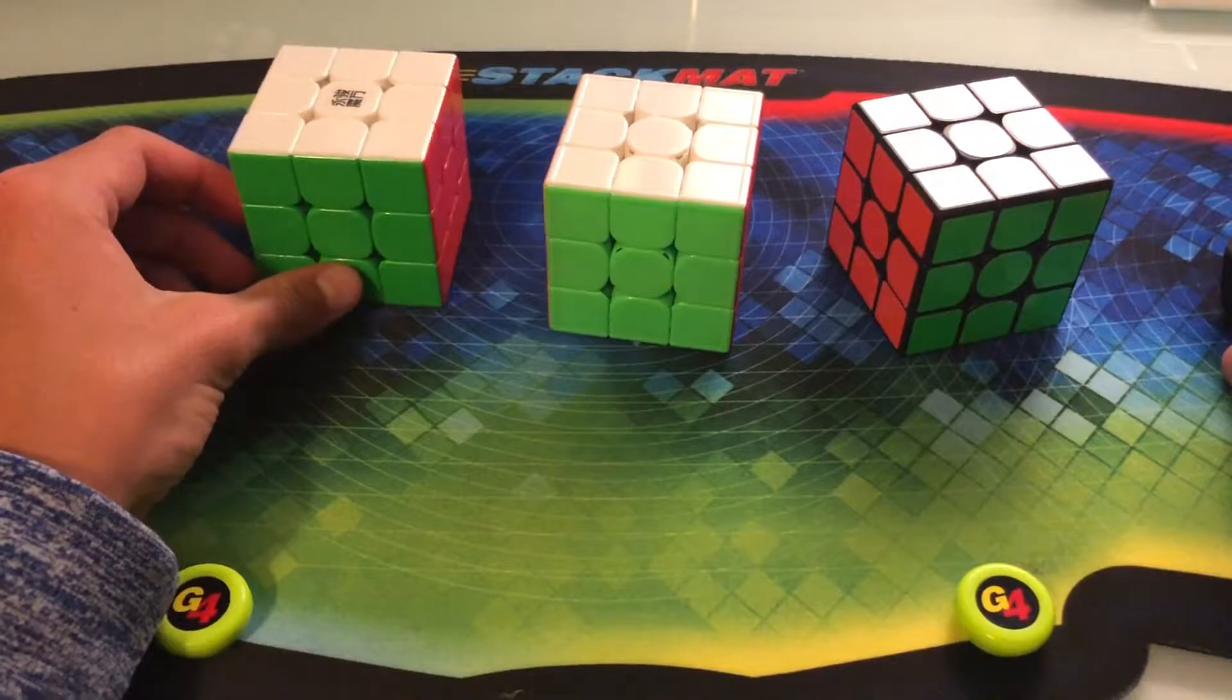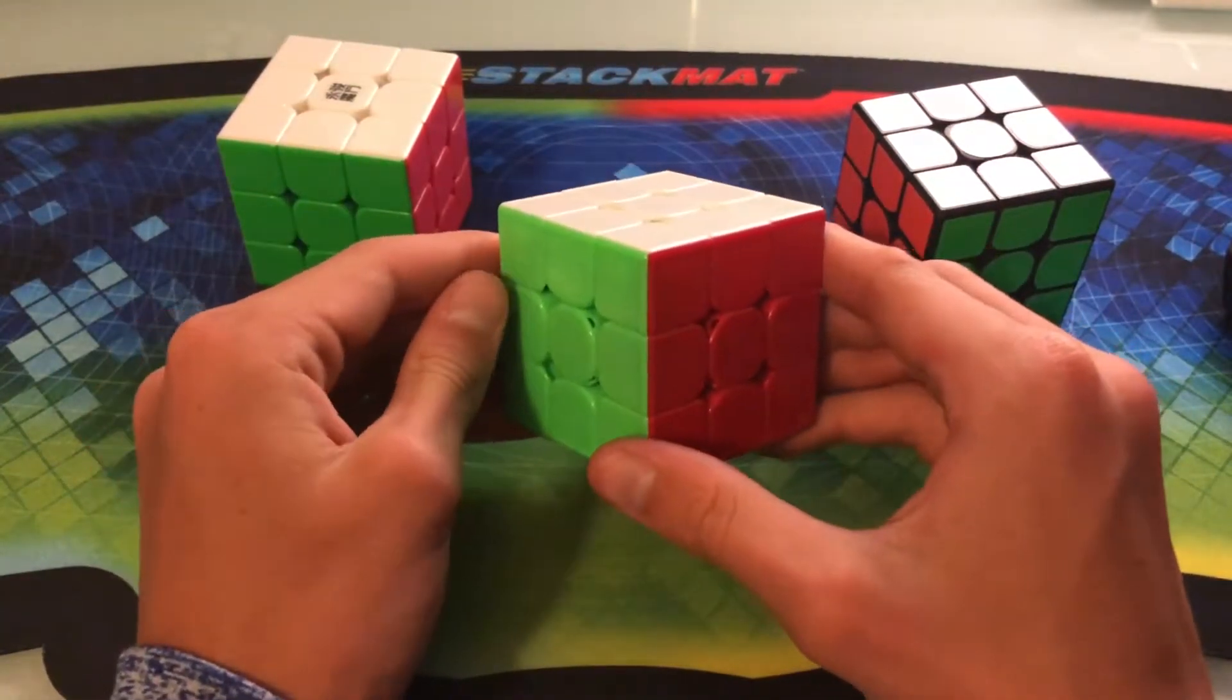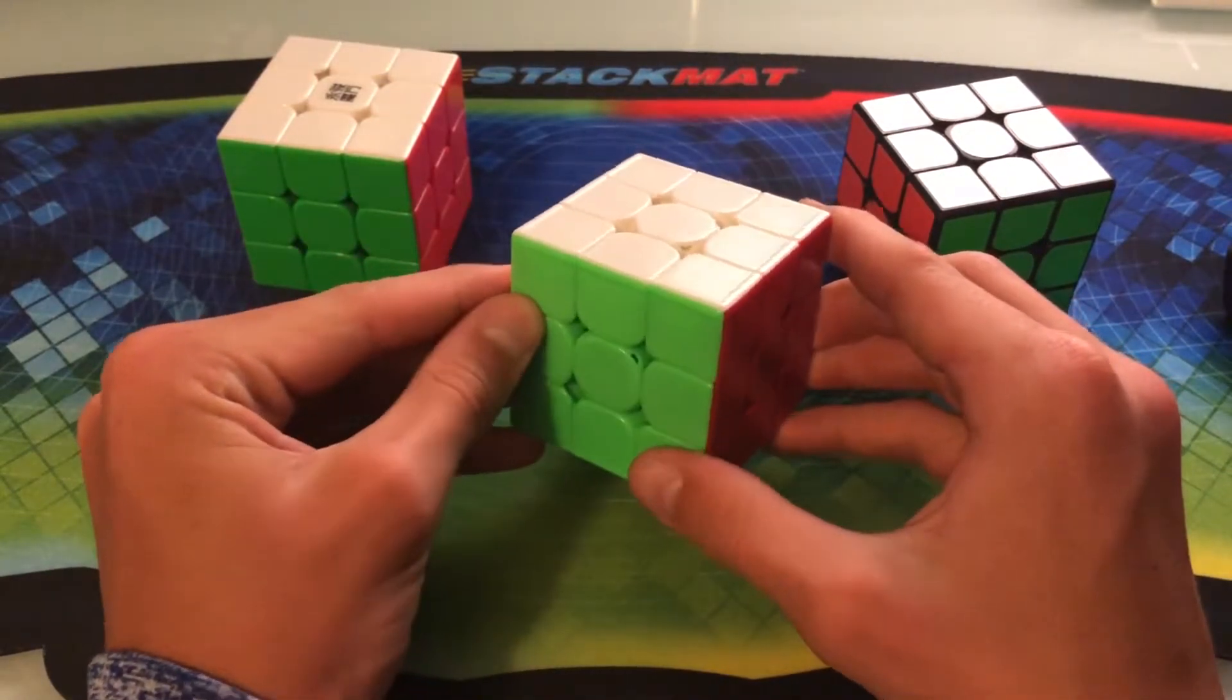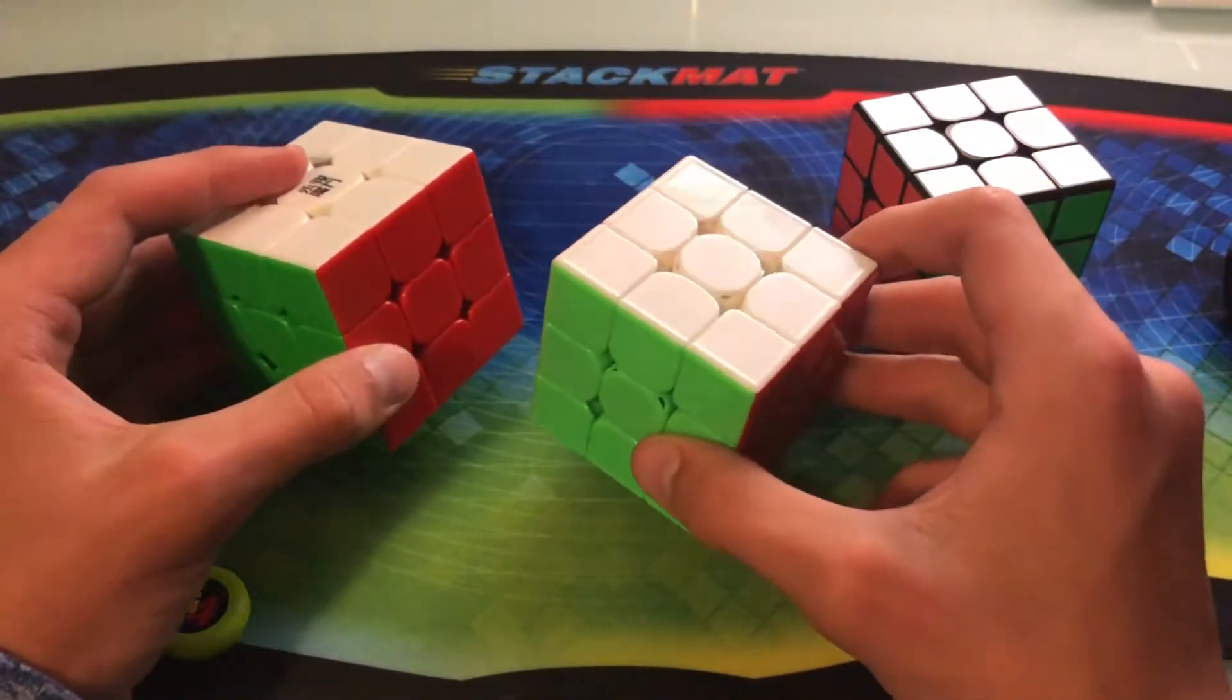And in second place, we have the Weilong GTS-3M at an average of 5 of 19.01 seconds, which is our $40 speed cube, which is kind of interesting that our $12 speed cube beat out the $40 one.